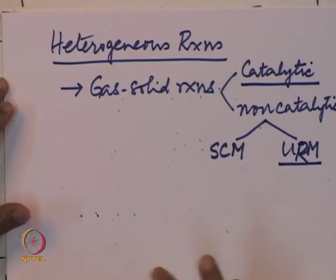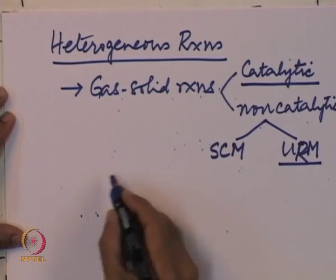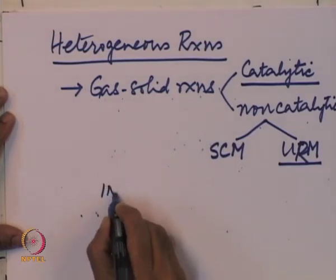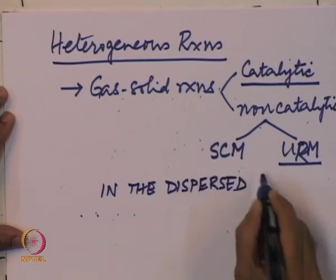In both catalytic reactions and uniform reaction models, you model the concentration profile through the solid. Treating particles as spherical, you write the diffusion equation for a sphere, get the concentration profile with diffusion and reaction, and differentiate the concentration profile at the surface to find the rate at which the reactant is consumed. Whether catalytic, non-catalytic, shrinking core, or uniform reaction, the reactions are in the dispersed phase, which happens to be the solid in this case.